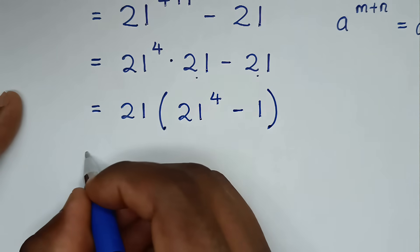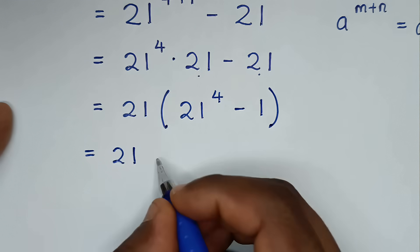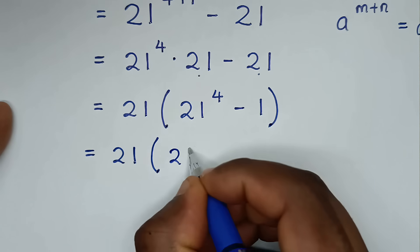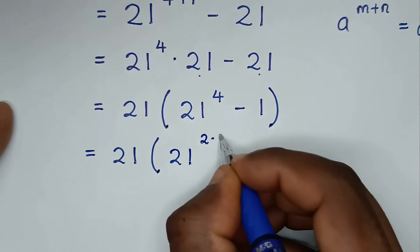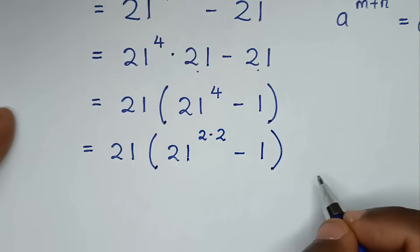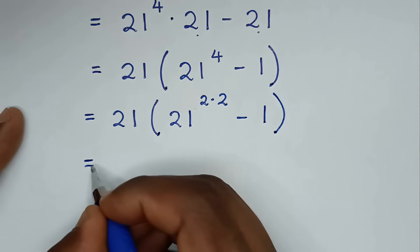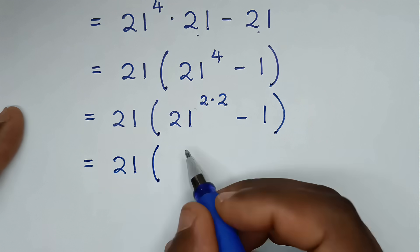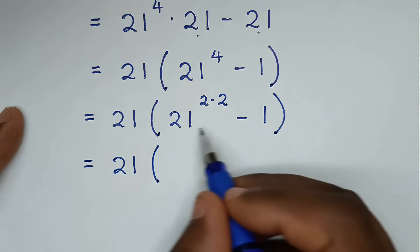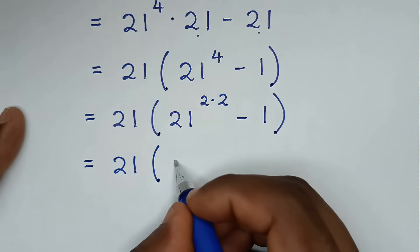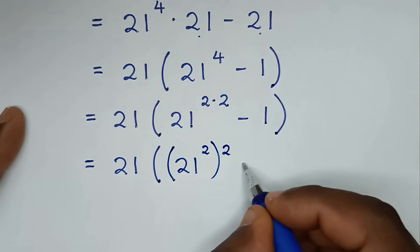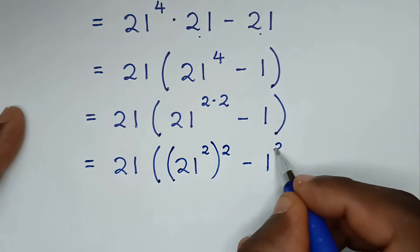In the next step, it will be equal to 21, then bracket, and we make 21 power 4 into squares — 21 power 4 is the same as power 2 times 2. So it becomes 21 squared, squared, minus 1 squared, inside the bracket.